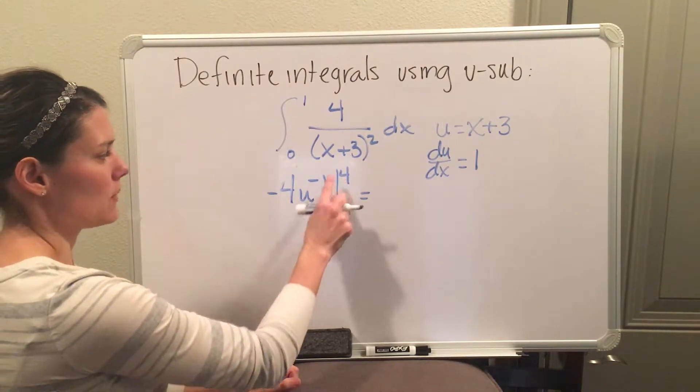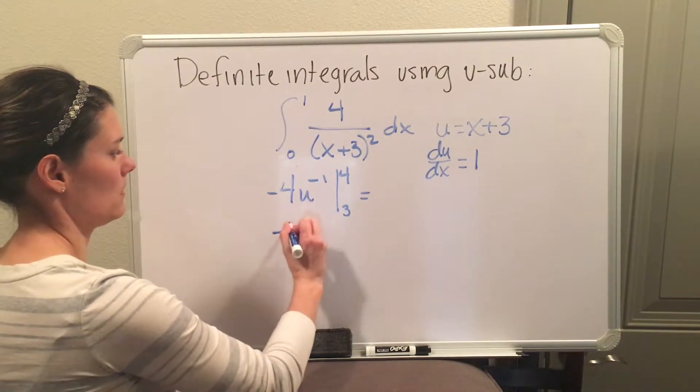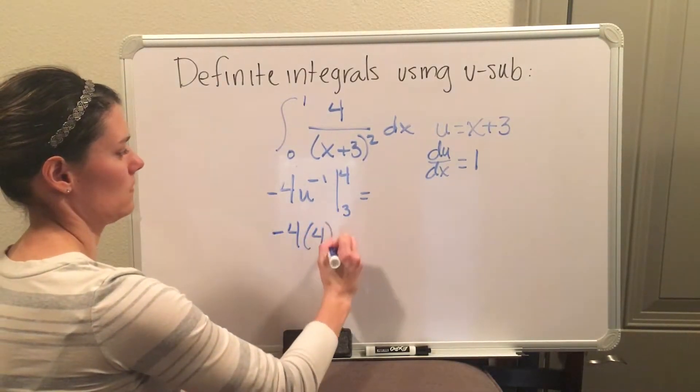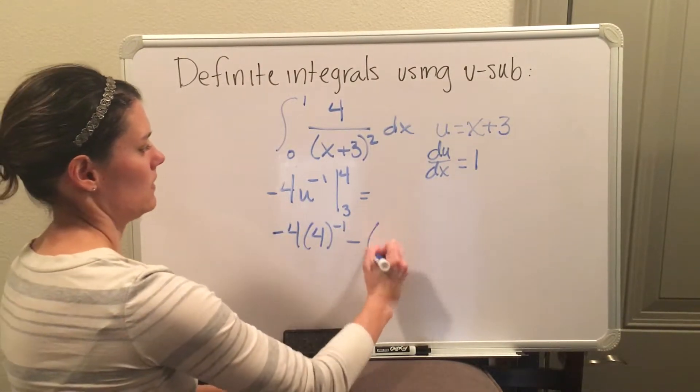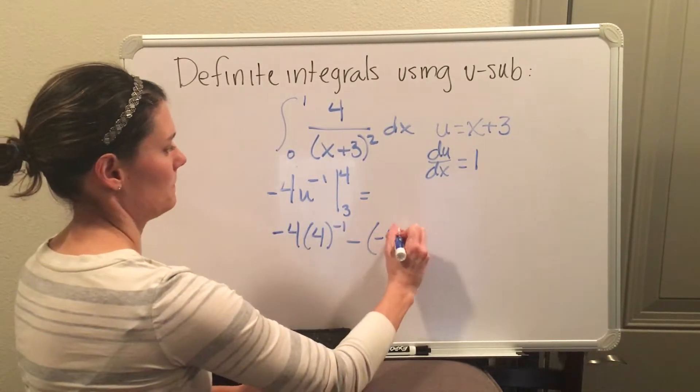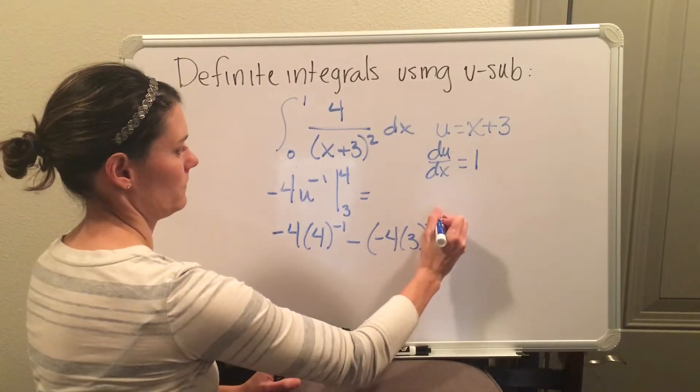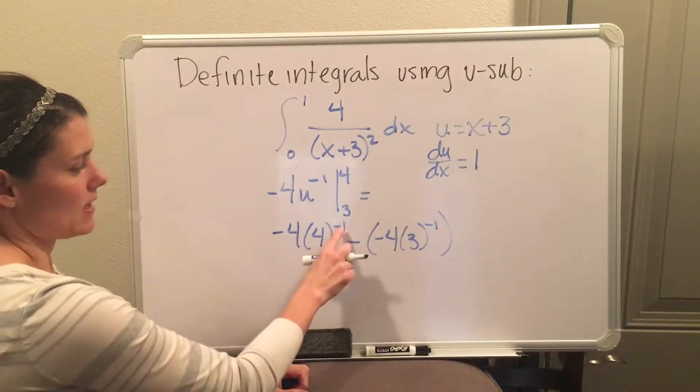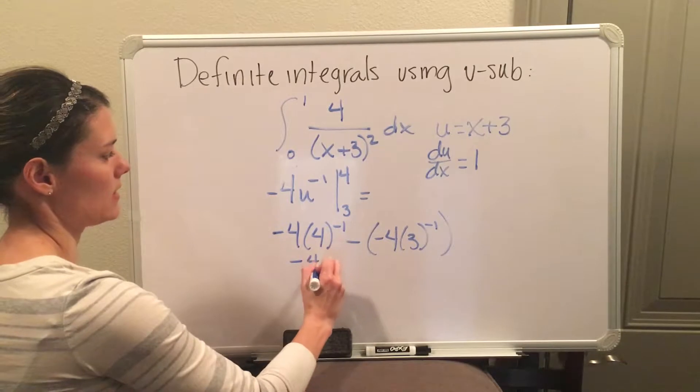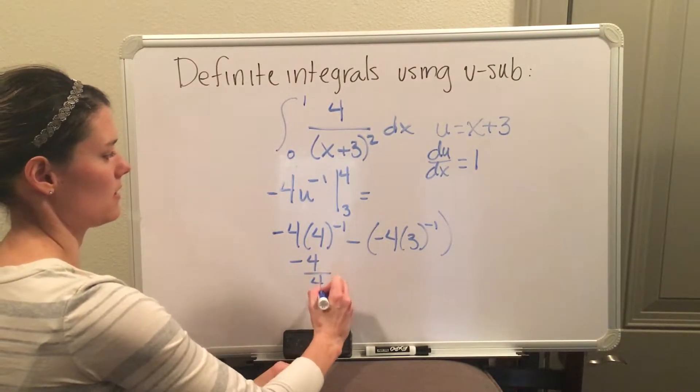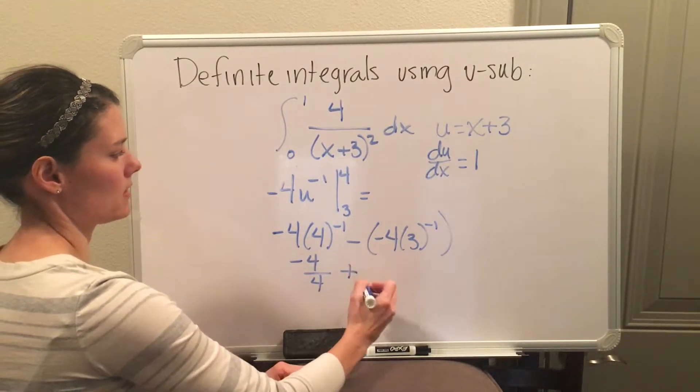So the FTC states you're going to plug in 4 first, and then minus. Now you're going to plug in the a. And then I'm going to simplify it some. A negative 1 power means that you bring it underneath.